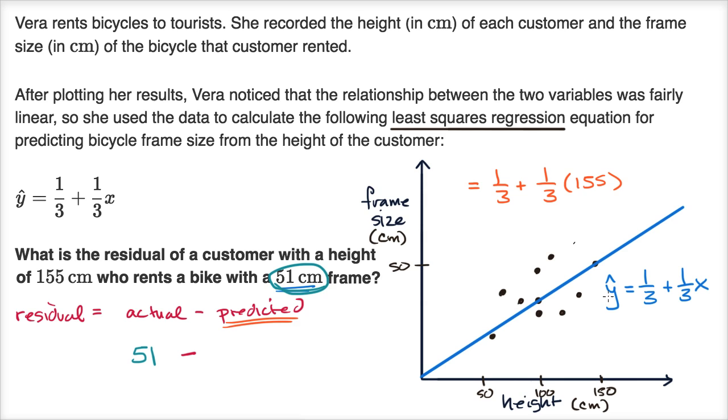Y hat is what our linear regression predicts, our line predicts. So what is this going to be? This is going to be equal to one third plus 155 over three, which is equal to 156 over three, which comes out nicely to 52.